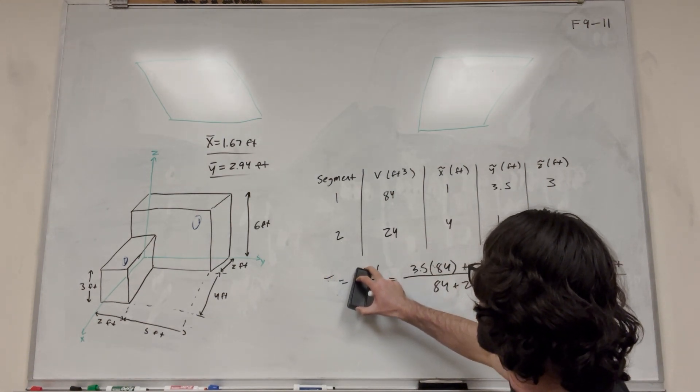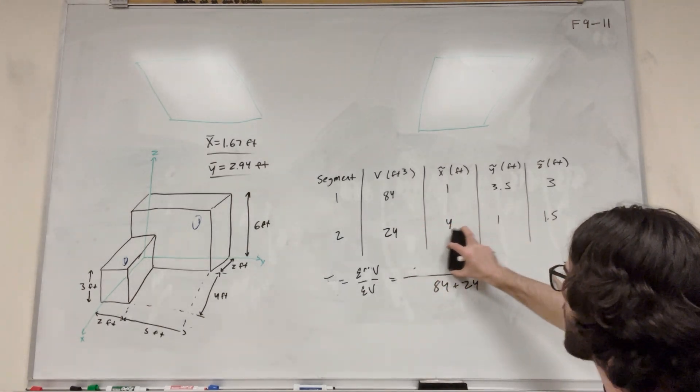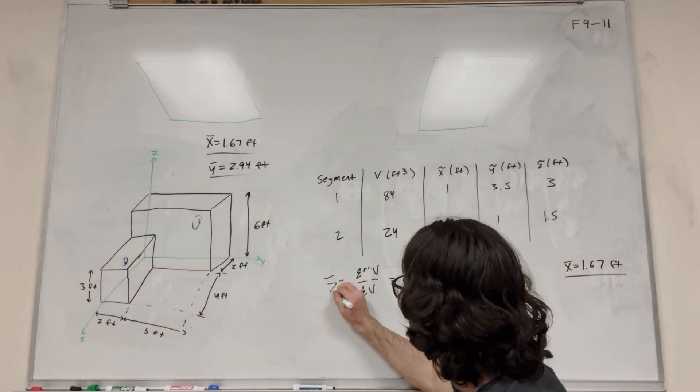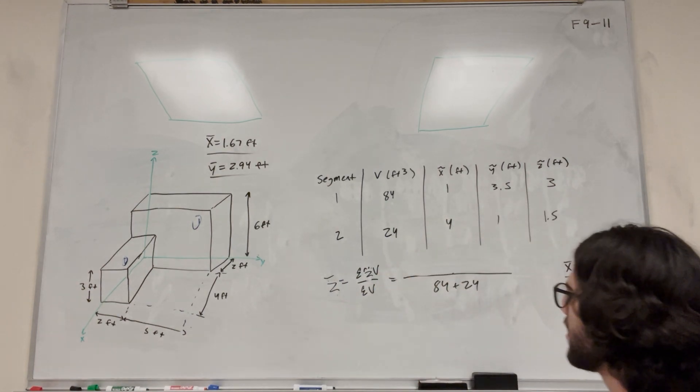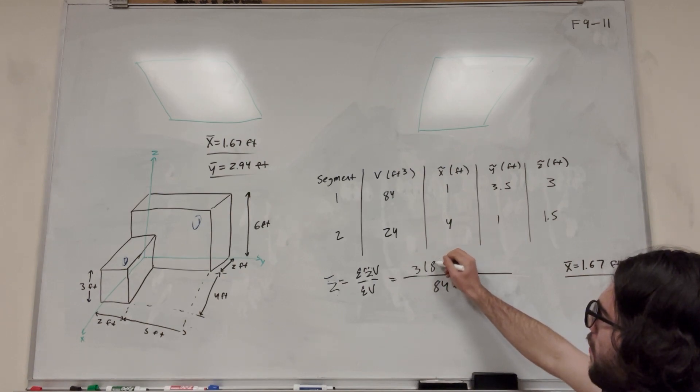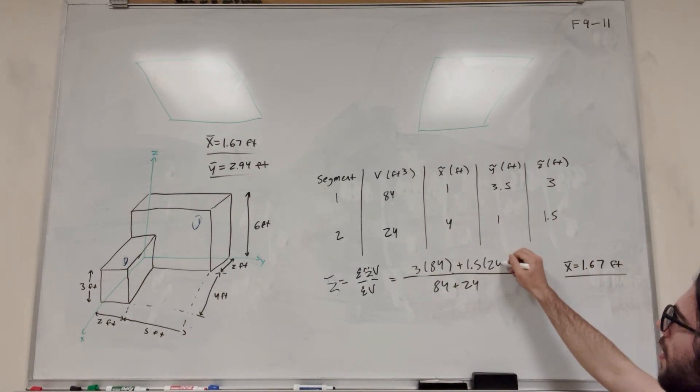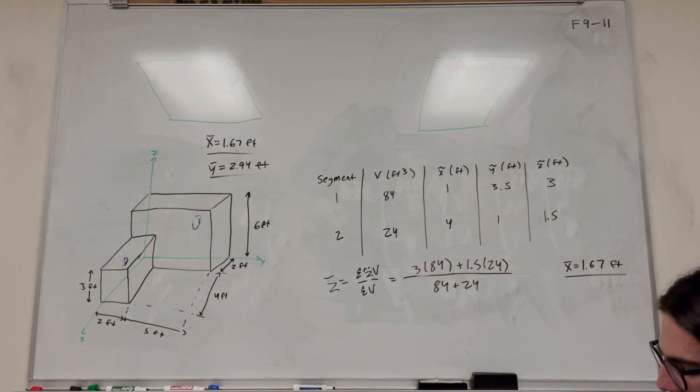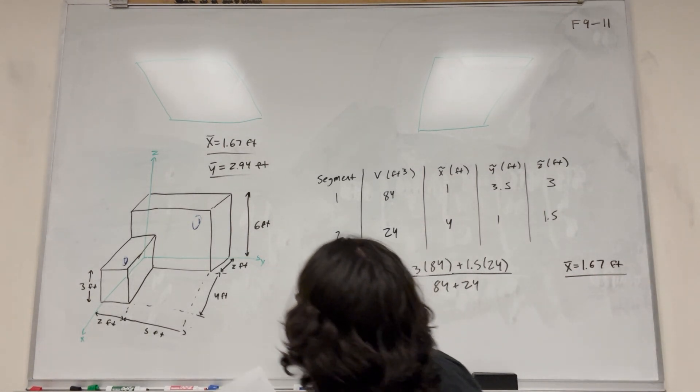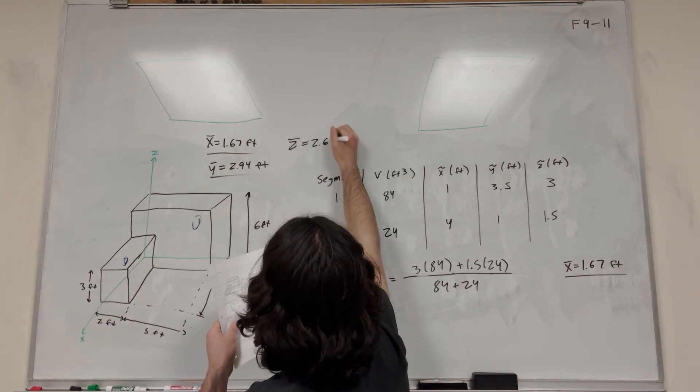So then z bar, I guess you can probably guess what it's going to be. We can even just keep the denominator the same, because it's always going to be adding up the volumes. It's going to be z bar plus z tilde. So we're going to add up the next one. So it's going to be 3 times 84 plus 1.5 times 24. So then you do the math on this. You get that z bar is equal to 2.67 feet.